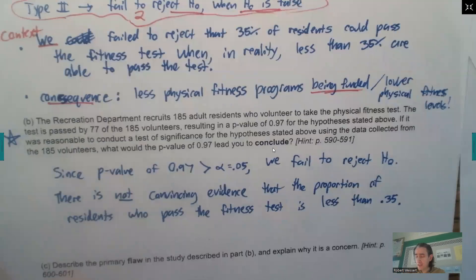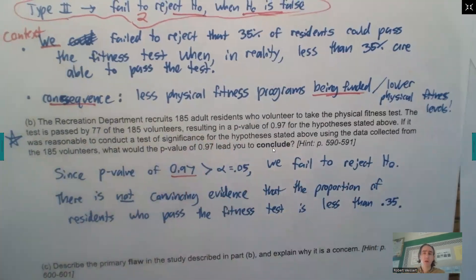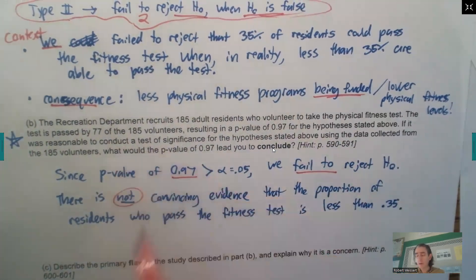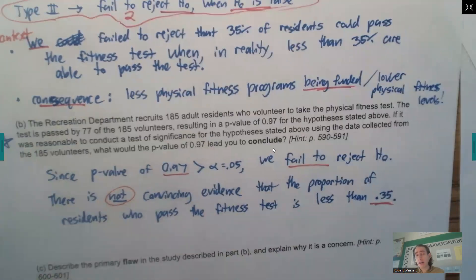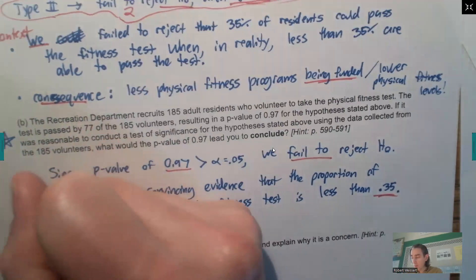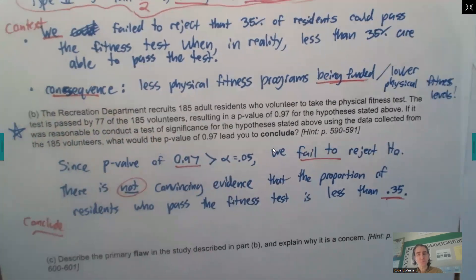Okay. In this problem here, 0.97 is our P value. That's awfully high. So obviously in this problem here, we'd want to fail to reject the null. It's way higher than our alpha level. So we just do not have convincing evidence that the proportion of residents who passed the fitness test is less than 35%. So the P value was already provided to us. We weren't having to calculate that to run the test. We just want to interpret what that means. So this would be like the conclude part of a state plan to conclude.